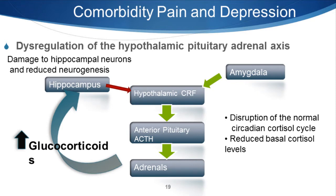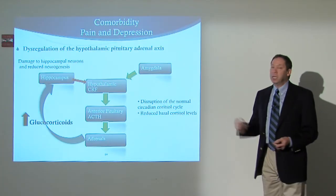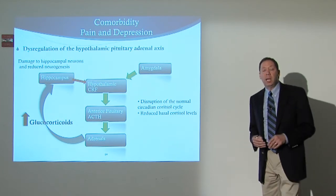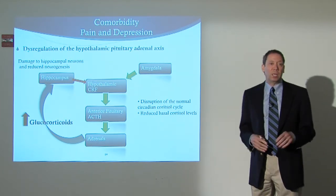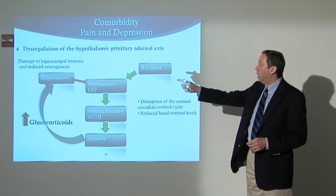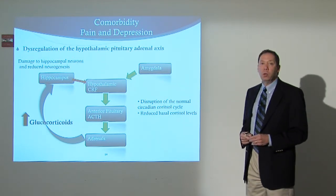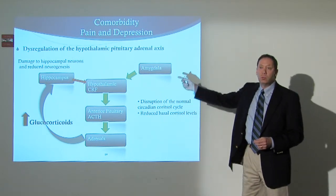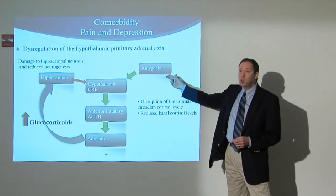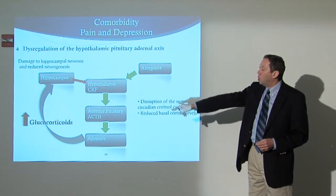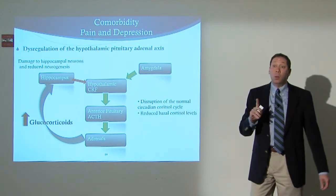Indeed, what happens in problems with both chronic pain and depression, this axis gets dysregulated. There's a problem with the signaling processing in terms of what happens between the hippocampus and the hypothalamic nuclei in the brain. Also, it happens in over-influence of the amygdala, which is responsible for emotional processing in the brain, and that effect in turn causes a dysregulation.